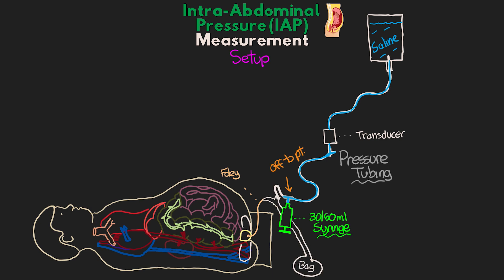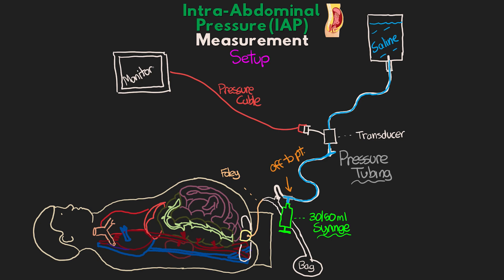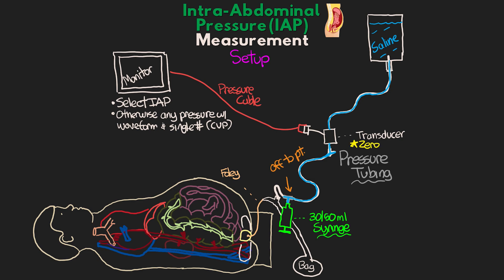From there, attach the end of the primed pressure tubing to the sampling port. Run the pressure cable from the transducer on your setup to the monitor. If your monitor has an intra-abdominal pressure option, usually labeled as IAP, go ahead and select that. Otherwise, any pressure channel that gives a waveform and a single number reading will work — CVP is a great example. Just be mindful of what you choose when your numbers are pulled into the charting system, as you'll need to correct those. Then zero your transducer to the monitor just like you would any other pressure line.